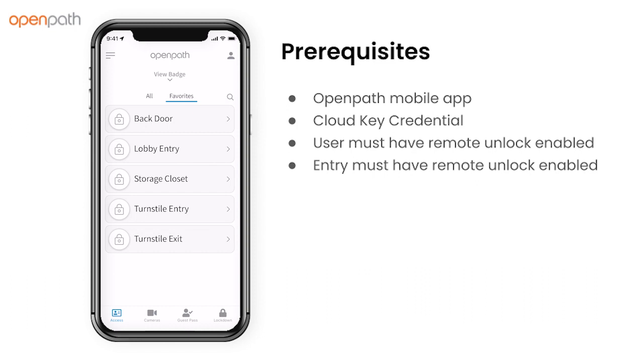To share a guest pass, you'll need the OpenPath app installed, a CloudKey credential, and you must have remote unlock permissions enabled on your user and on the entry.